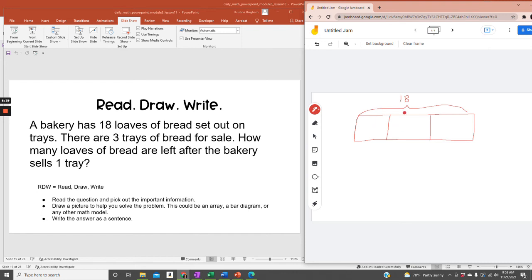So how many are in each tray? 18 divided by 3 equals 6. So on one tray, there would be 6 loaves of bread.